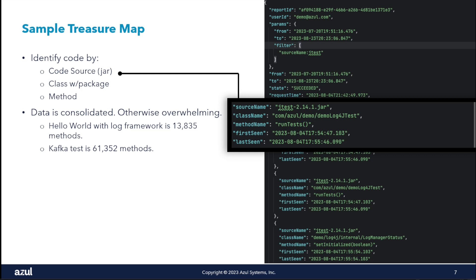We consolidate this data across runs of an application. A Hello World application has about 14,000 different methods. If you run that application 1,000 times, you don't need 1,000 times 13,835 records. We recognize it's the same application, summarize those runs together, and help you pinpoint what you're using — because ultimately it all tracks down to one code base that you're maintaining and can remove code from.